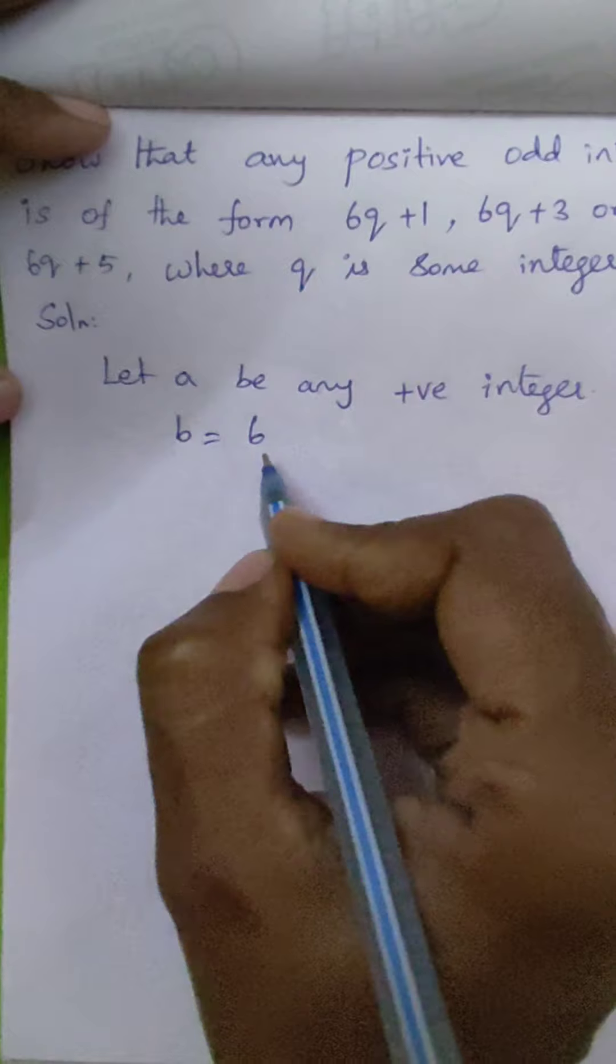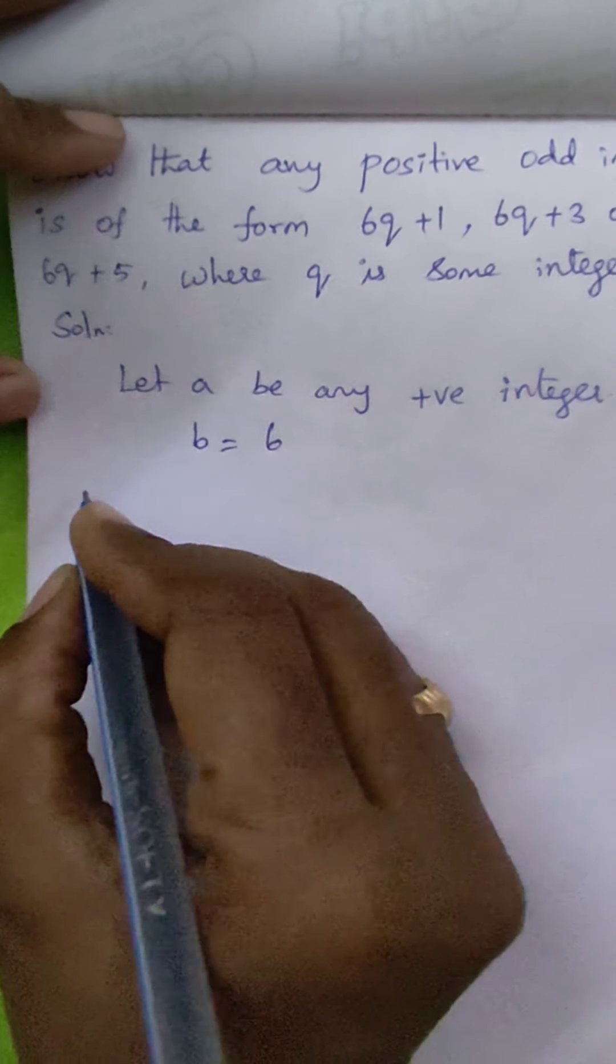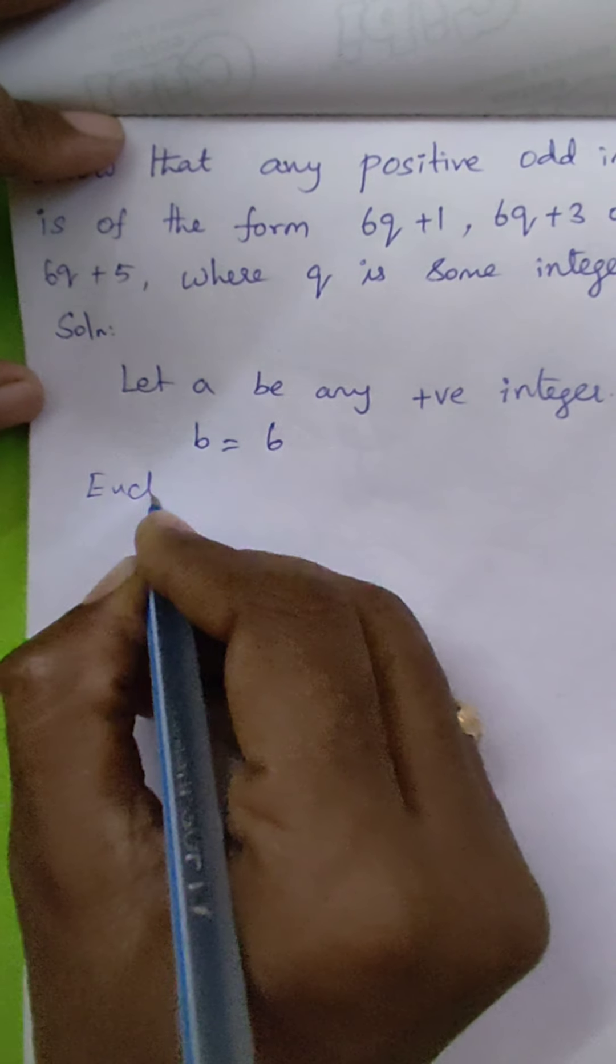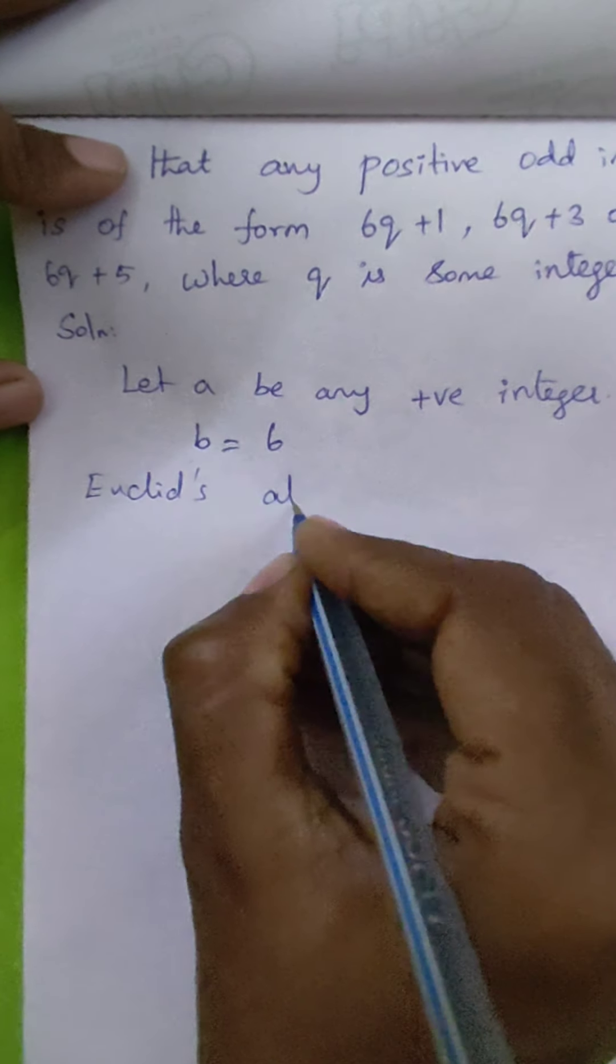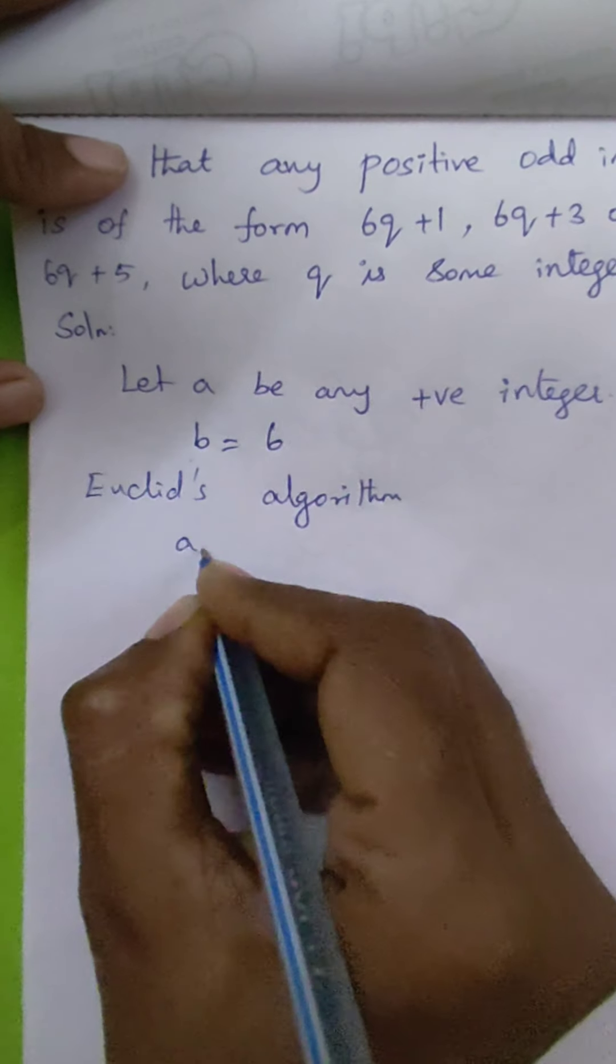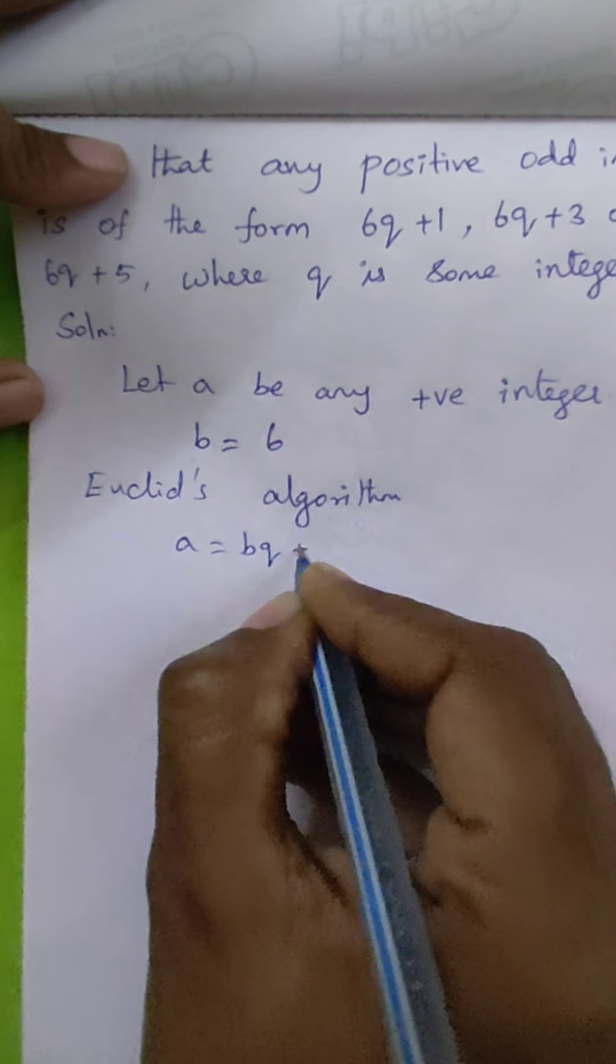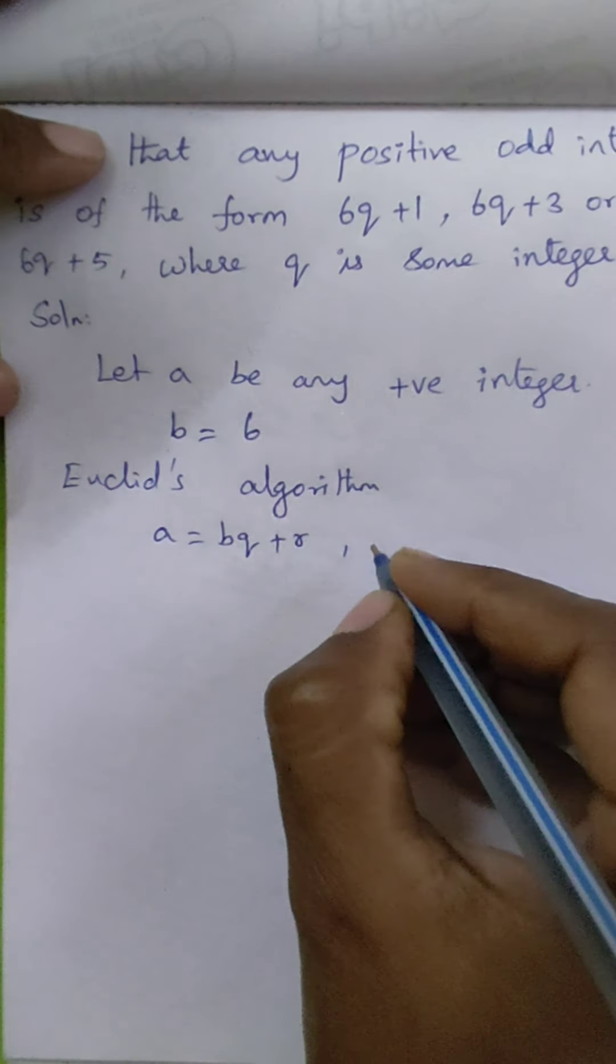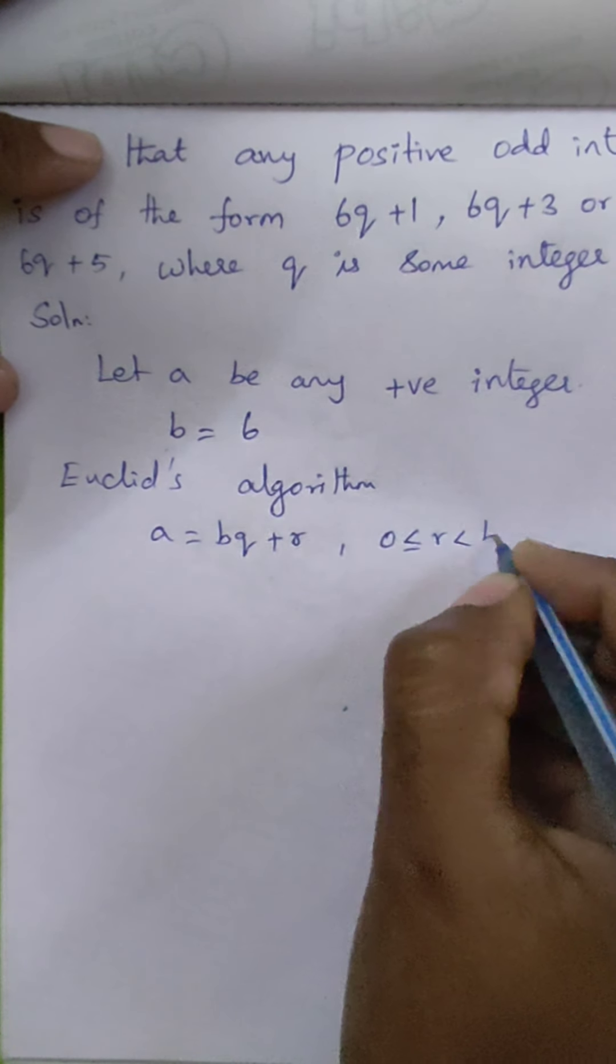By using Euclid's algorithm, I can write a equals bq plus r, where r lies between 0 and b.